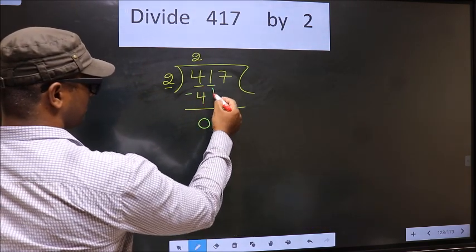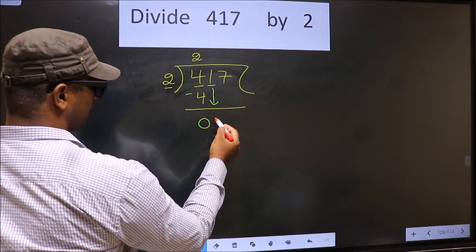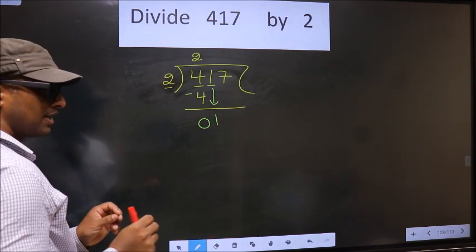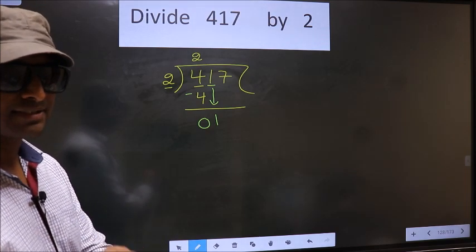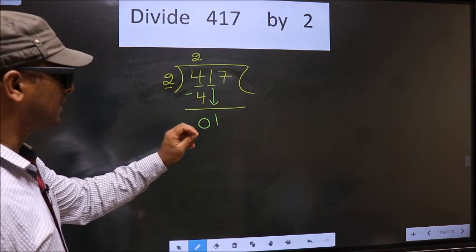Now you bring down the beside number 1 down and this is where the mistake happens and the mistake is this. Here we have 1,